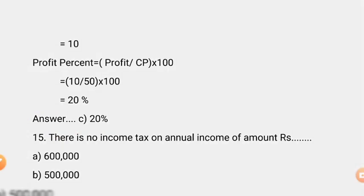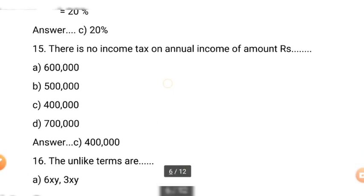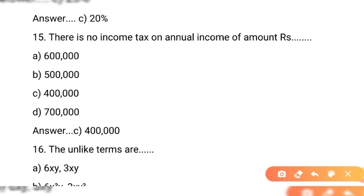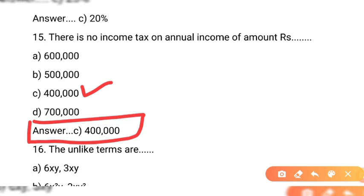Question number 15: there is no income tax on annual income up to how much? Options hain: A — 6 lakh, B — 5 lakh, C — 4 lakh, D — 7 lakh. Abhi tak jo annual income limit hai jis par tax nahi hai woh 4 lakh hai. Correct option C — 4 lakh. Jo 4 lakh se zyada ho, us par income tax lagega.